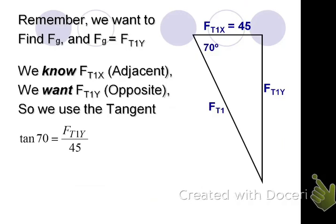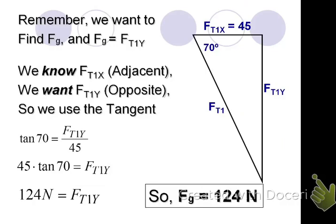How do I get FT1y by itself? Multiply by 45. So 45 times the tangent of 70 equals FT1y. Now I just push buttons on my calculator. Round it to three significant figures. Include the units. I get 124 newtons is FT1y. So how much does it weigh? It weighs 124 newtons. That's the force of gravity. Another name for the weight.